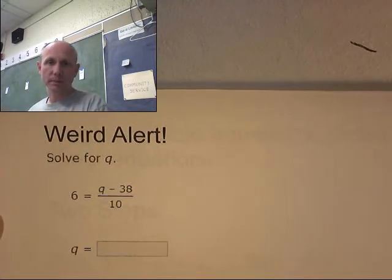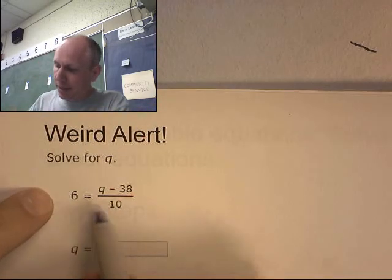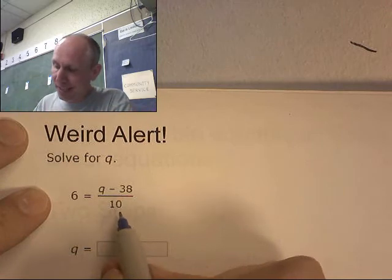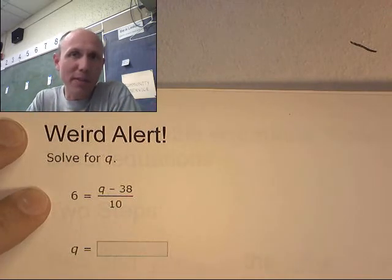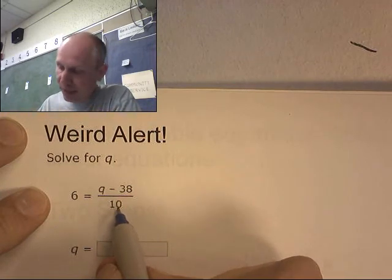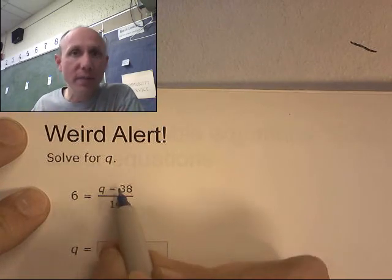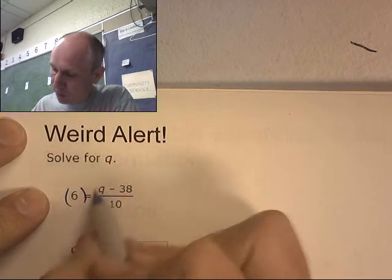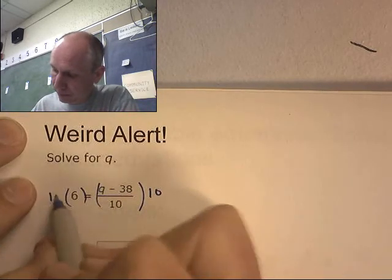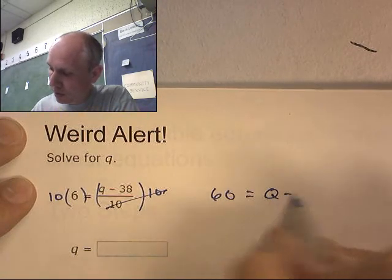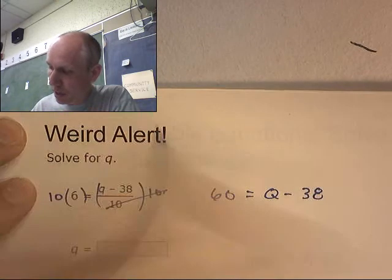Okay, here's a weird one. I have 6 equals q minus 38 over 10. It's a little bit weird because I'm not going to do a pick and drop to start with. I'm actually going to multiply to start. This ten is bugging me. What's he doing? He's trying to divide. How do I fight division? Multiplication. Let's multiply. I'm going to have 60 equals q minus 38.